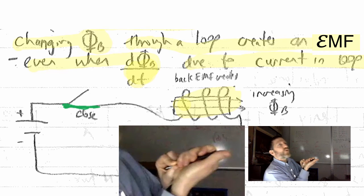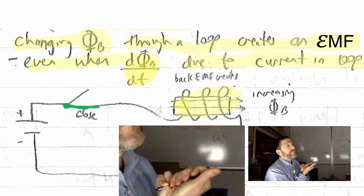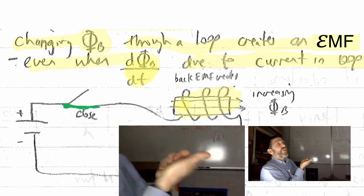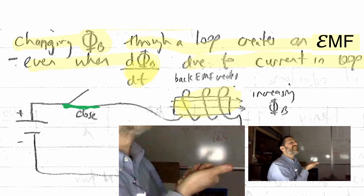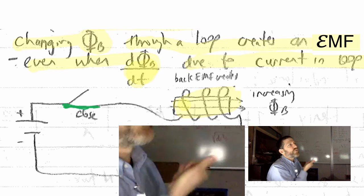So when we are, once the current's going, the magnetic field will be which way? To the right. So we start off with nothing and we end up with this. So which way is the change in magnetic field? To the right.